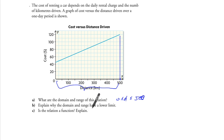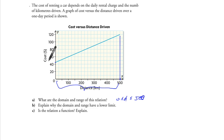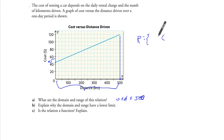Explain why the domain and the range have a lower limit. State the range. The range looks like halfway — so this looks like 45 ending at 120. The range is the cost between 45 to 120.